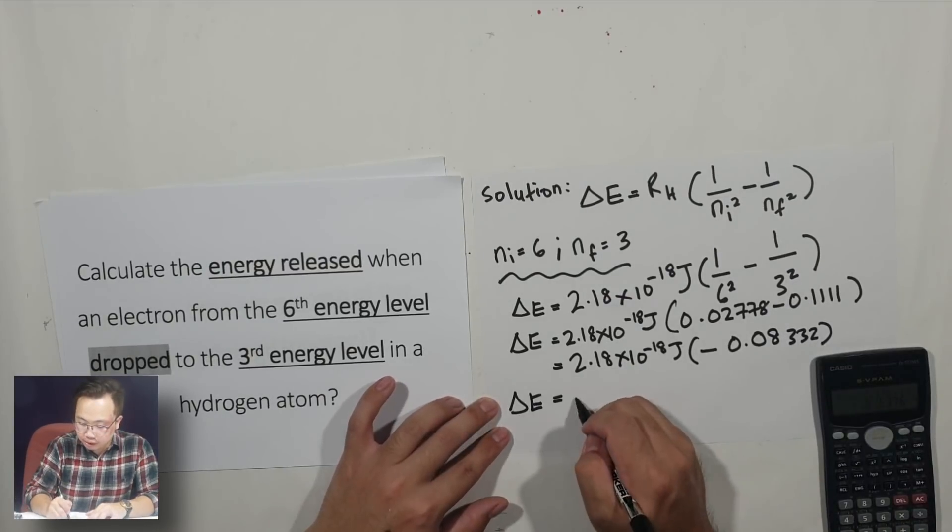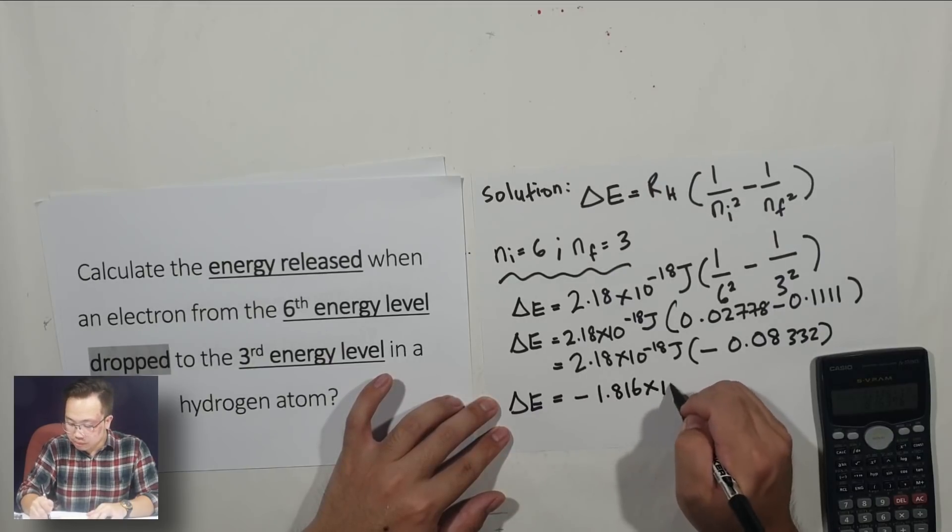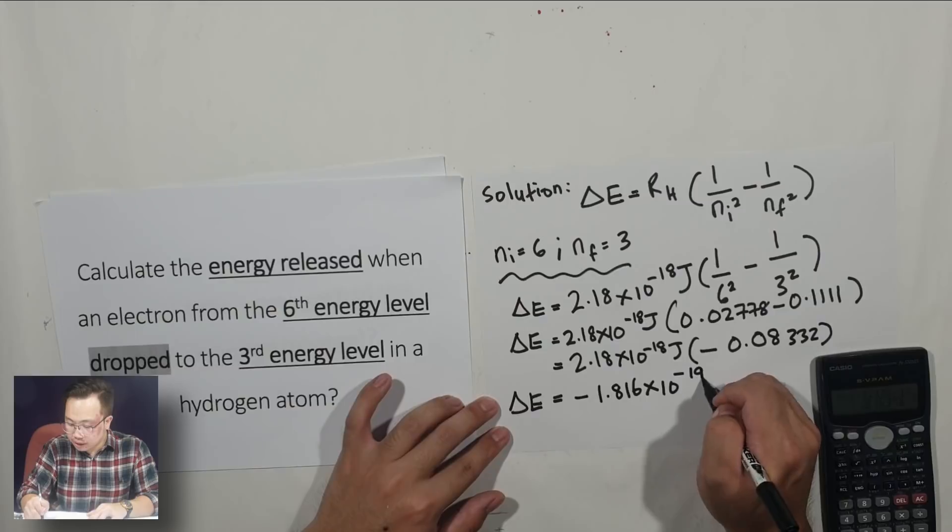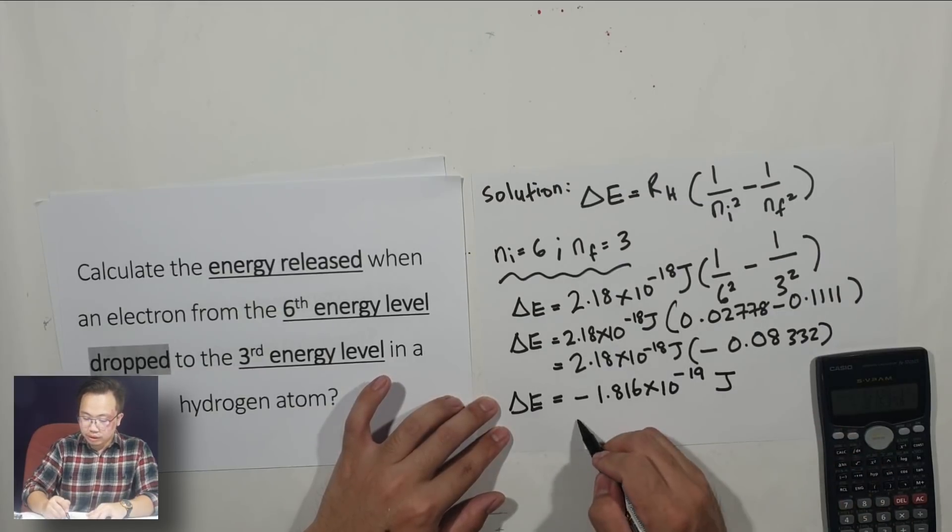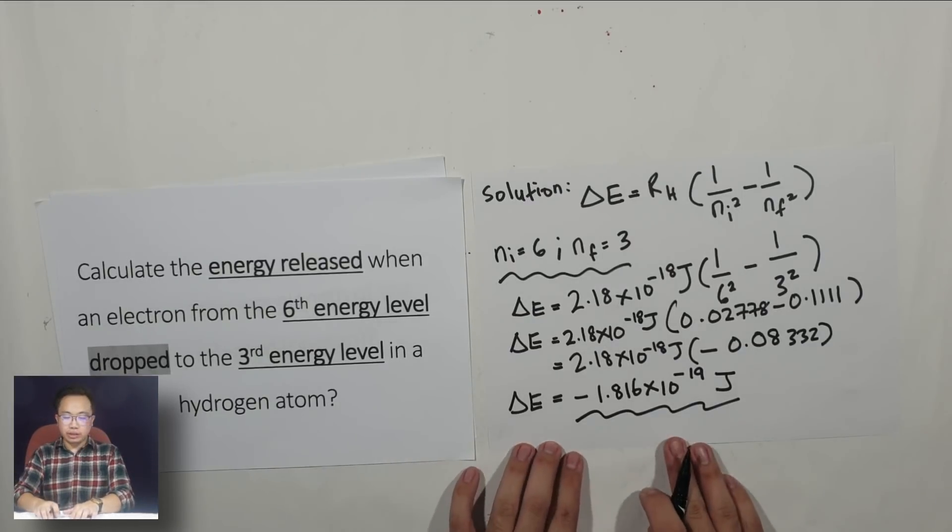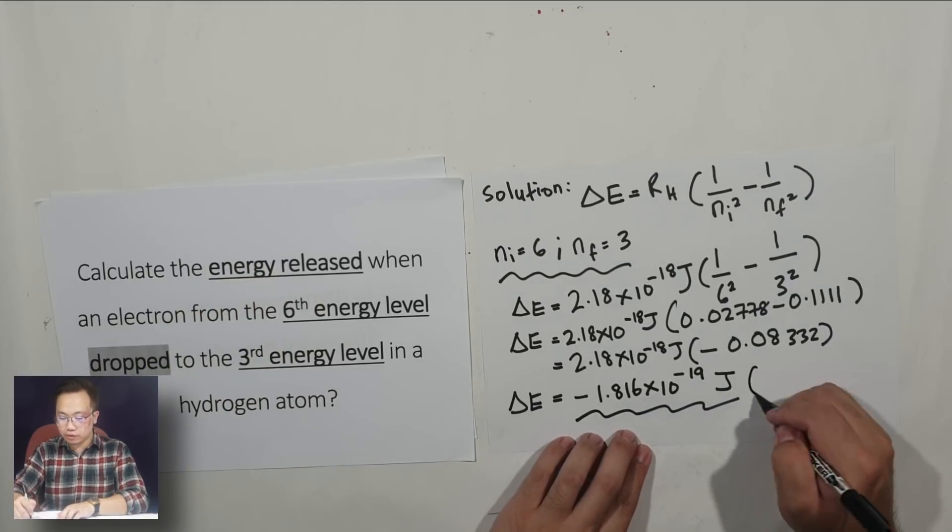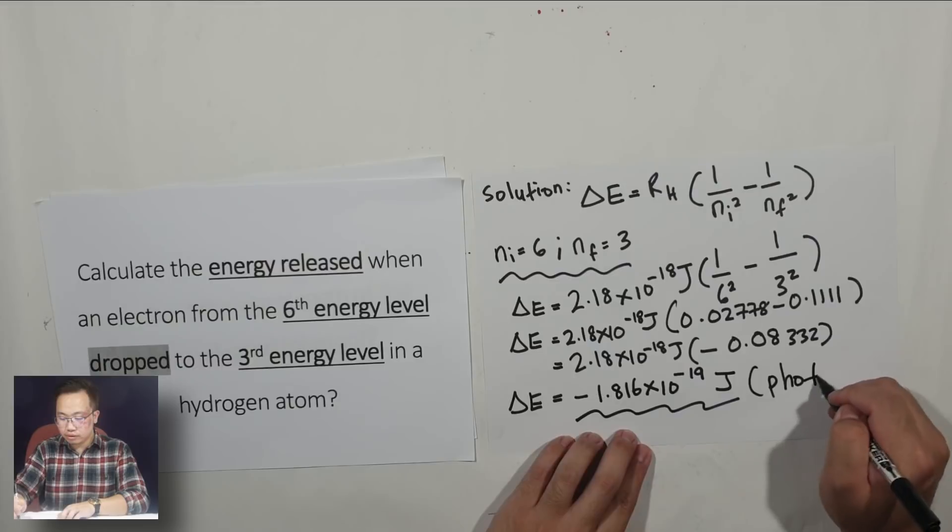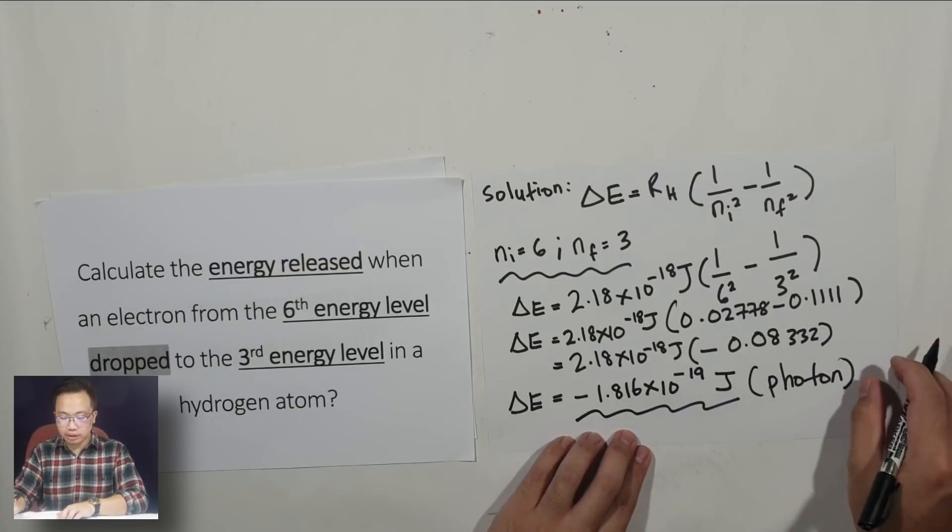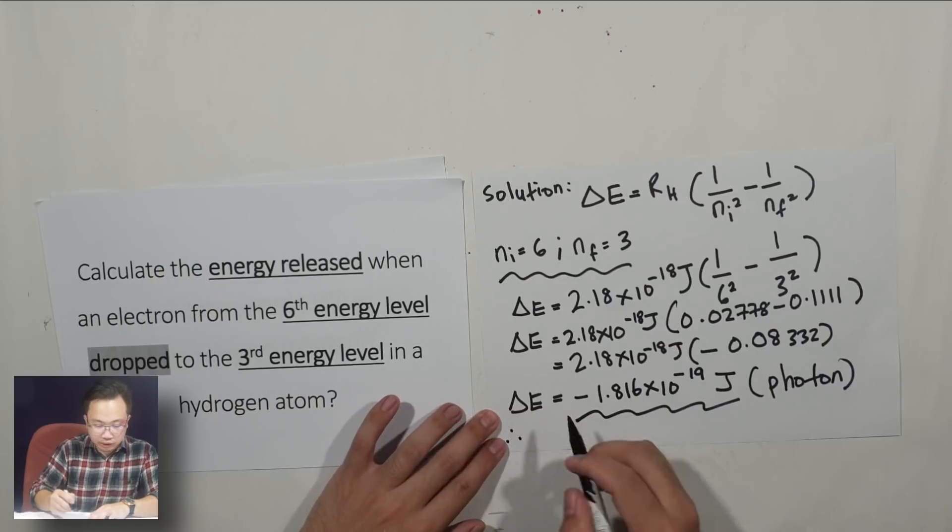It's going to be negative 1.816 times 10 to the negative 19 Joule. This is the energy being released by this transition. This is the energy of your photon.